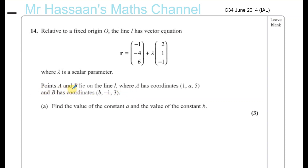Points A and B lie on the line L, where A has coordinates 1, A, 5 and B has coordinates B, minus 1, 3. Find the value of the constant A and the value of the constant B.